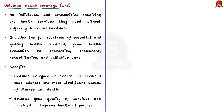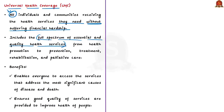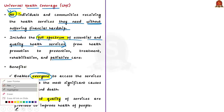Universal health coverage means that all individuals and communities receive the health services they need without suffering financial hardship while paying for those services. This includes the full spectrum of essential and quality health services ranging from health promotion to health prevention, treatment, rehabilitation and palliative care for serious illness. Universal health coverage enables everyone to access services which address the most significant causes of disease and death, and ensures that the quality of those services is good enough to improve the health of the people who receive them.